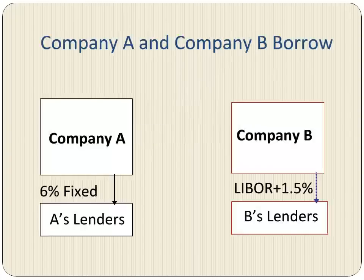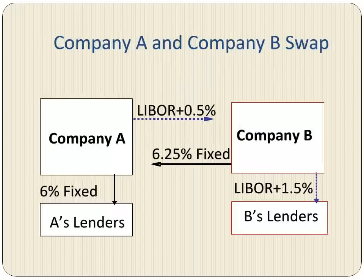Now let's see how the two parties can structure a swap deal. First, both companies go out and borrow the $1 million independently. Company A borrows at a 6% fixed rate, whereas Company B borrows at LIBOR plus 1.5%. Normally there would be a financial intermediary that would help the two companies structure a swap deal, but for our example we assume that they are dealing with each other directly. The two companies enter into a swap agreement where Company A agrees to make floating rate payments to Company B at LIBOR plus 50 basis points, and Company B agrees to make fixed rate payments to Company A at 6.25%. These rates are not magical — they are negotiated rates; they could have negotiated some other rates.